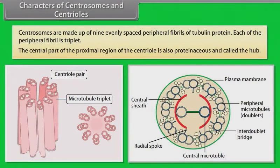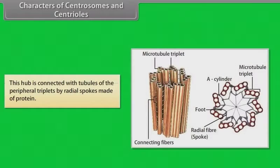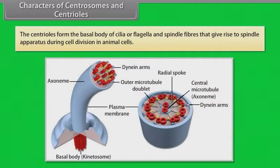The central part of the proximal region of the centriole is proteinaceous and called the hub. This hub is connected with tubules of the peripheral triplet by radial spokes made of protein. The centrioles form the basal body of cilia or flagella and the spindle fibers that give rise to the spindle apparatus during cell division in animal cells.